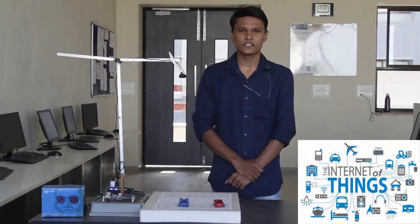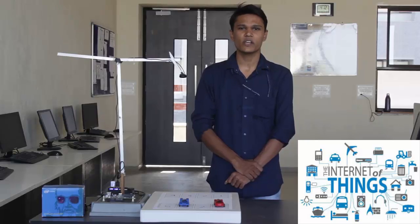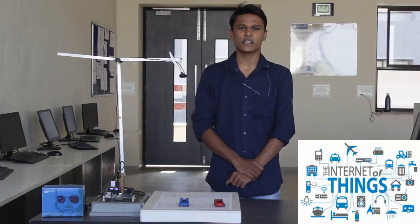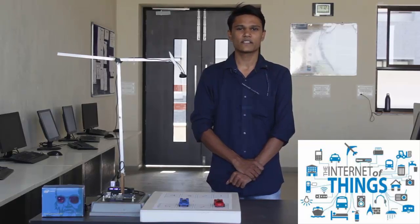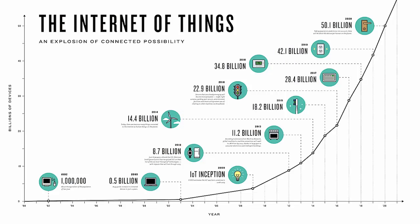The Internet of Things is the network of physical objects or things embedded with electronics, software, sensors, and network connectivity, which enables these objects to collect and exchange data. The IoT allows these objects to sense and control remotely across existing network infrastructure, creating opportunities for more direct integration between physical world and computer-based systems. Experts estimate that IoT will consist of 50 billion objects by 2020.